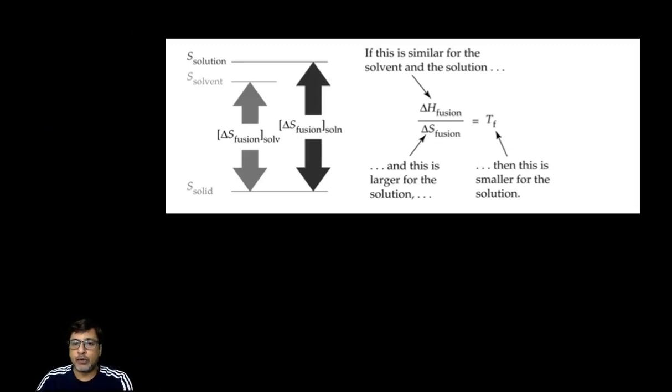Now you know that Gibbs free energy is the formula: delta G. If I write the expression, delta H minus T delta S.